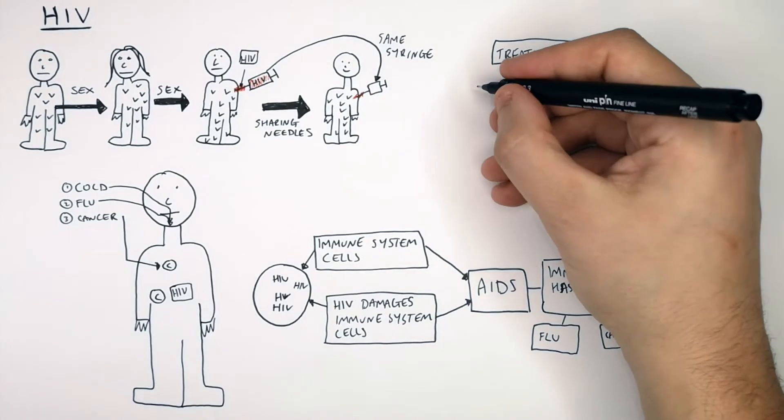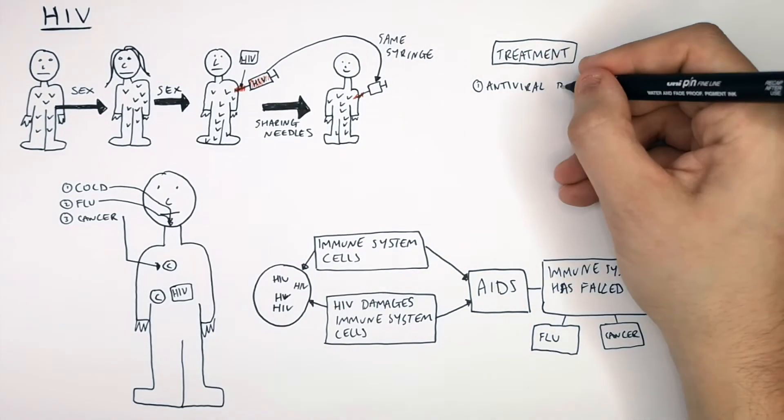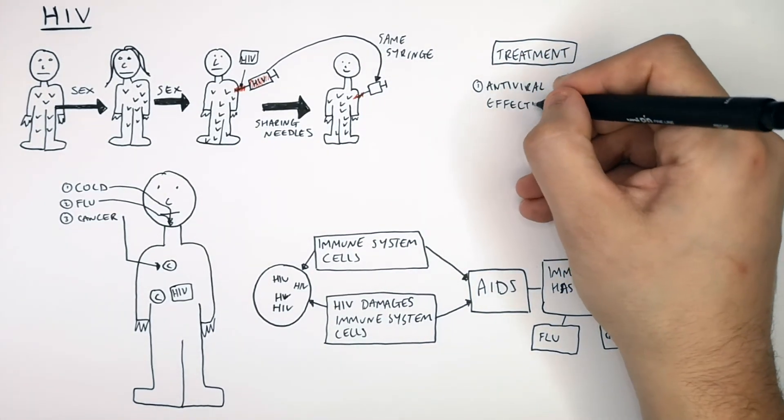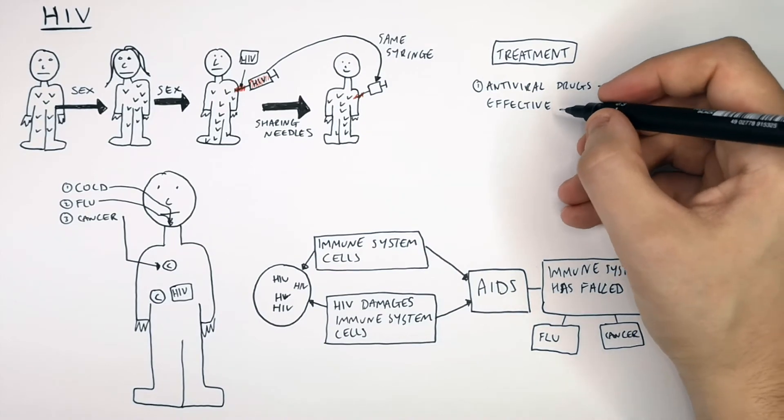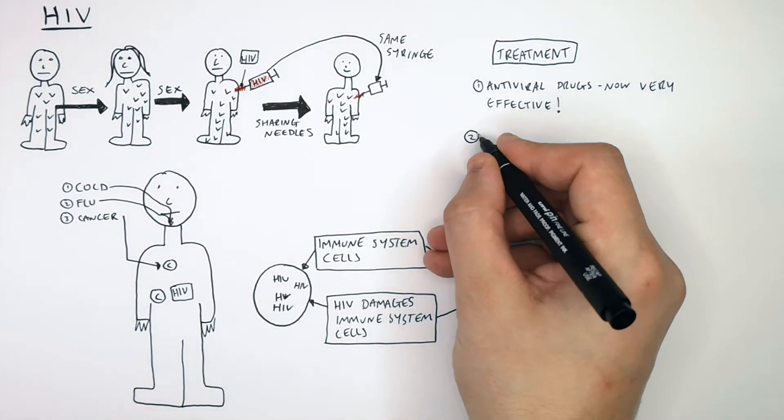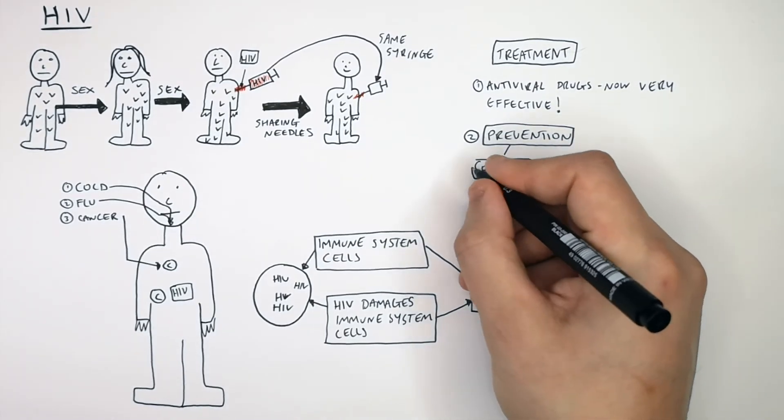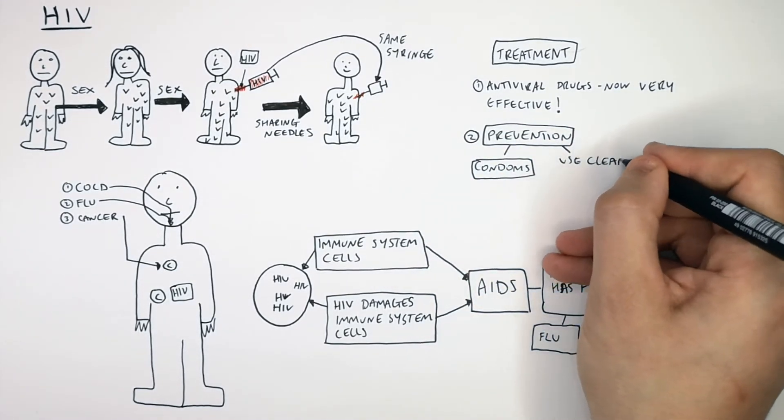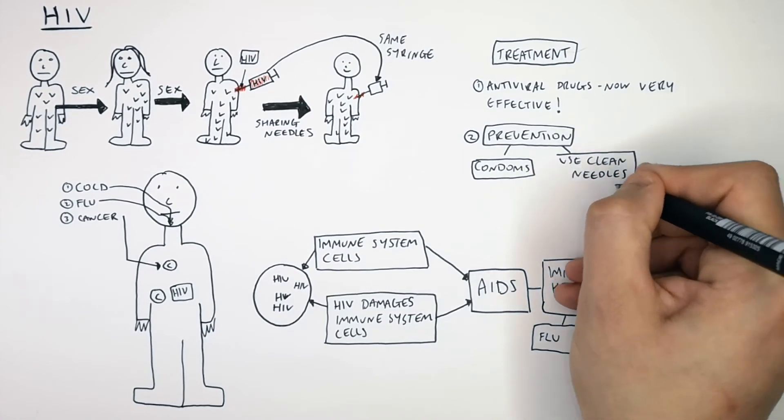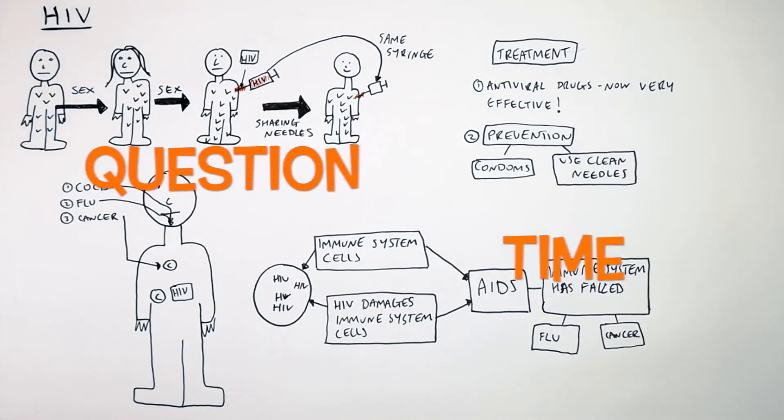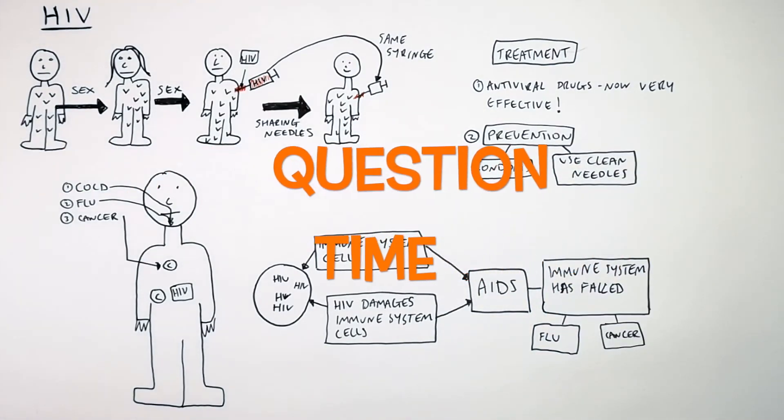So what is the treatment for HIV? Well, you've got antiviral drugs that are now very effective that will prevent the onset of AIDS. And how do you prevent the transmission of HIV? Well, very easily you use condoms if you're having sex. And if you're going to use needles, you make sure they're clean, fresh needles out of a packet. It's question time. Attempt these questions to check your understanding.